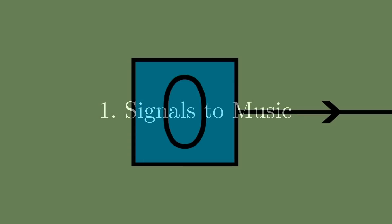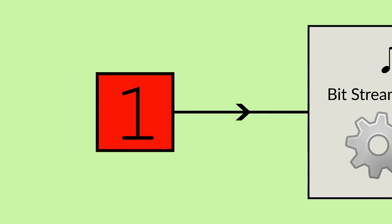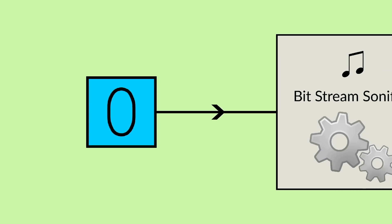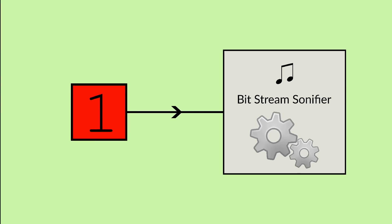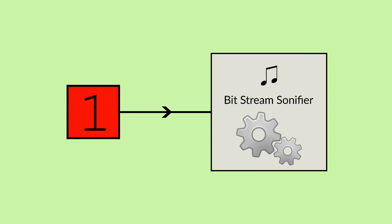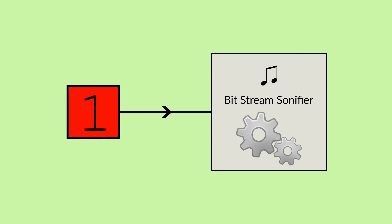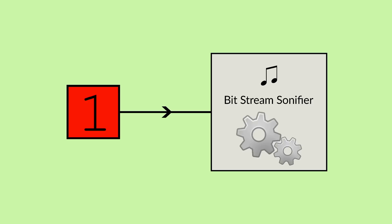Now, the first step in making music from something like this is to come up with a scheme for converting a single binary stream of zeros and ones to music. I envision this kind of like a machine that takes in zeros and ones at some regular interval, and uses them to generate or influence some music. For example, a simple and rather boring way to do this might be to play one sound for a zero, and a different sound for a one.